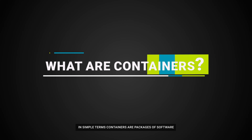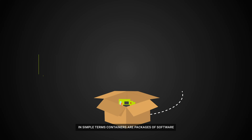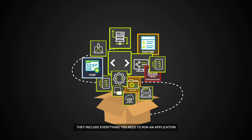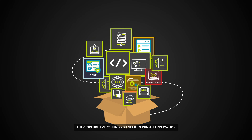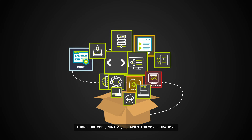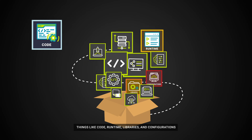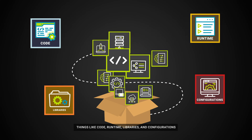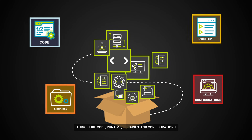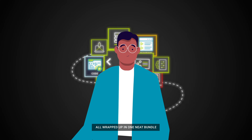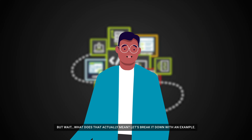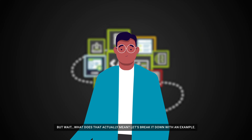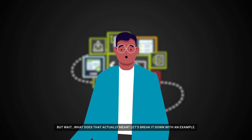In simple terms, containers are packages of software. They include everything you need to run an application — things like code, runtime, libraries, and configurations — all wrapped up in one neat bundle. But what does that actually mean? Let's break it down with an example.